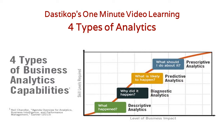The fourth one is called prescriptive analytics — what should I do about that? If possible, can I control it? If I want a desirable thing to happen, can I get it done? Or if there is a thing that I don't want to happen, can I prevent it? That is part of prescriptive analytics.